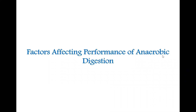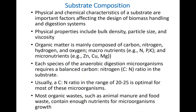The first factor is substrate composition. Every substrate has its chemical and physical characteristics, and these characteristics can affect the stability of the process and also the handling of digested material, as well as the effluent from the digester. Physical properties including bulk density, particle size, and viscosity are important properties that can affect the design of handling and mixing, and also the need for particle size reduction in case there are large particles that need to be ground before the digester itself.